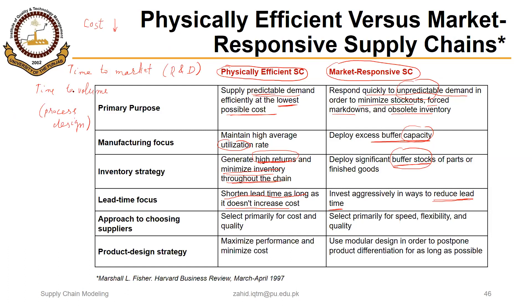In an efficient supply chain, suppliers are chosen primarily based on cost and quality — quality is an order qualifier, but low cost is key so the final product can be offered at a lower price. In a responsive supply chain, suppliers are selected primarily based on speed and flexibility, since demand changes quickly and is unpredictable, requiring adaptive suppliers. For product design strategy, an efficient supply chain maximizes performance and minimizes cost.